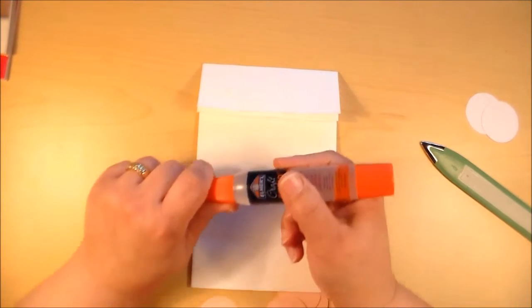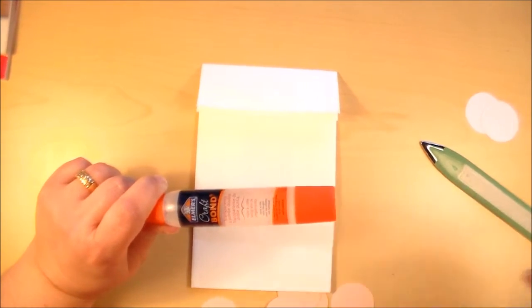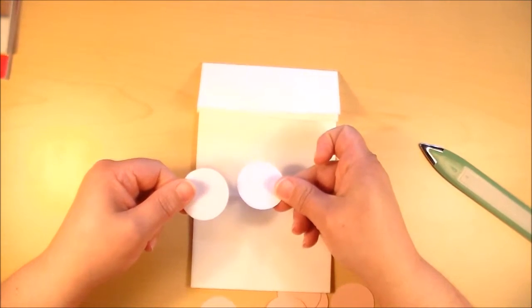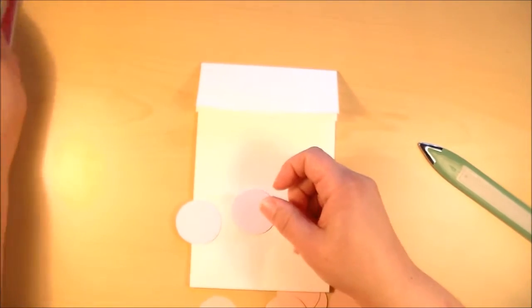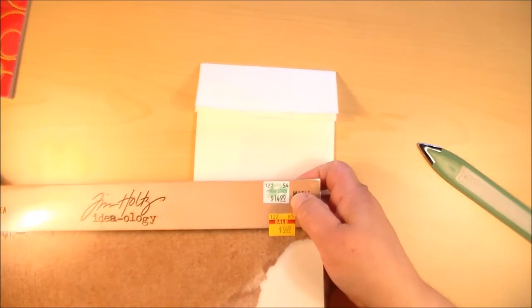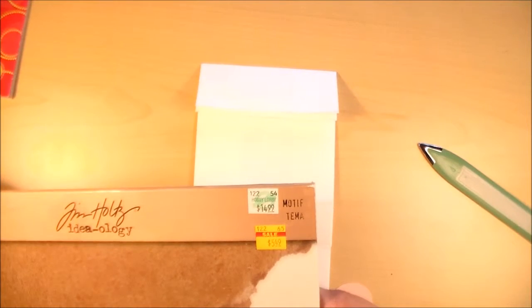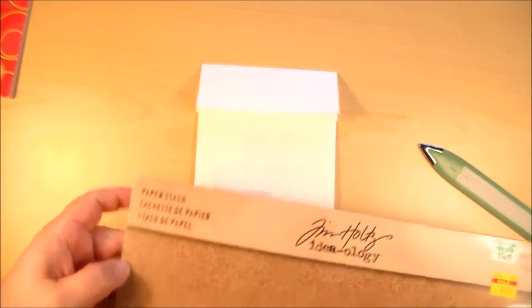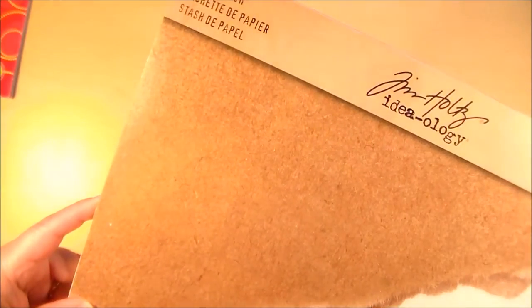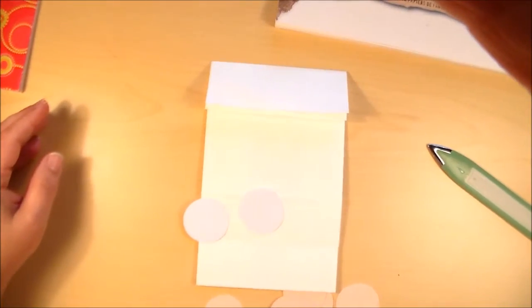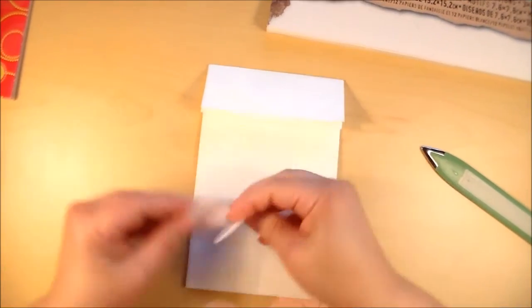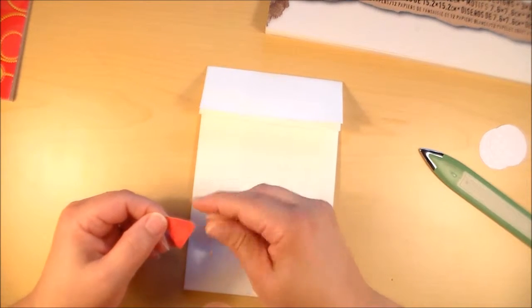I'm just going to take clear liquid glue. I also just took some white Tim Holtz craft paper that I got on sale at Hobby Lobby. You can see its original price was $15. I got it off the clearance bin for $5.49, and it's just called Paper Stash by Tim Holtz. Really nice craft paper, so I just chose a sheet of the white for the eyes, and then just a little bright orange sheet of craft paper I cut a triangle out of for the nose.